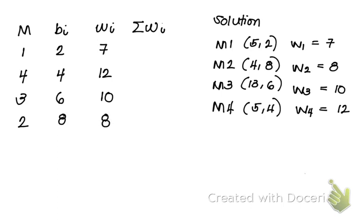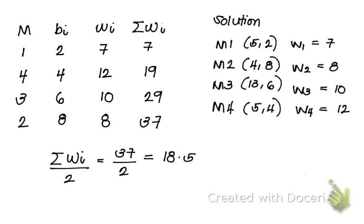Again, the cumulative value of the weights: 7, plus 12 is 19, then 29, and 37. The summation of W sub i over 2 is 37 over 2, which is 18.5. Scanning the values of your cumulative weights, the one that immediately exceeds or equates 18.5 determines the location of your new facility. Looking at 7, 19, 29, and 37, 19 exceeds 18.5, which gives you the value of y at 4.